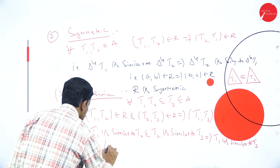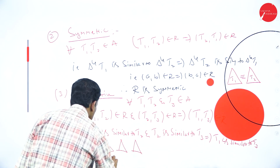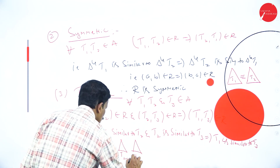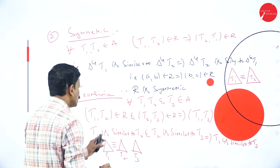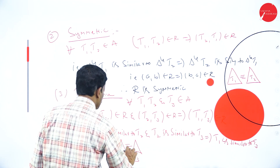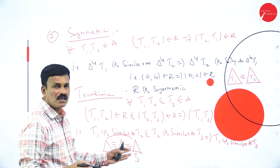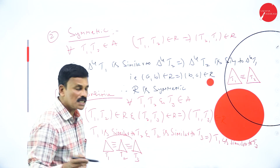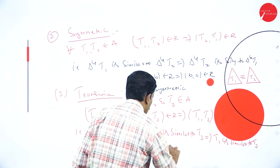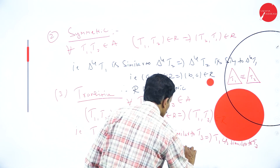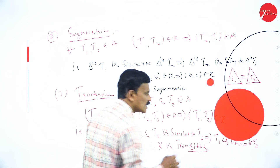Suppose these are three triangles T1, T2, and T3. If T1 is similar to T2 and T2 is similar to T3, then T1 is also similar to T3. So therefore transitive property is satisfied, and R is transitive.